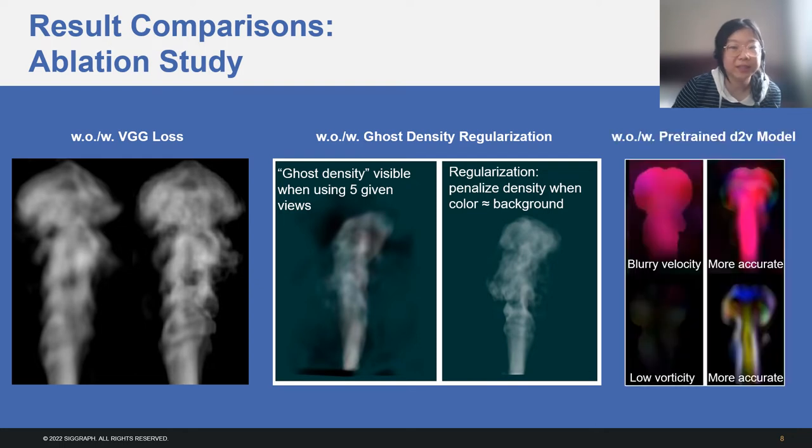While physical equations help us to keep the result physically plausible, the results are not necessarily constrained to the ground truth. Especially when optimizing density and velocity fields simultaneously, we sometimes arrive at sub-optimal local minimum with blurry velocity and underestimated vorticity. By supervising with the vorticity obtained from a pre-trained density to velocity fluid model, we can avoid this sub-optimal solution and get velocity results with enhanced vorticity.